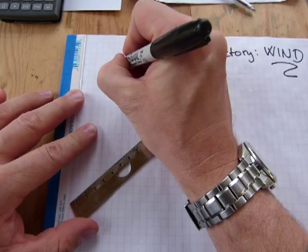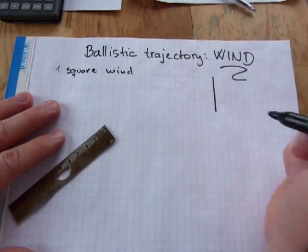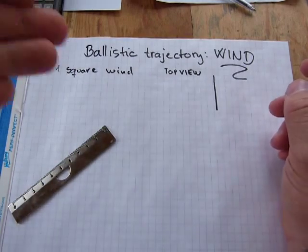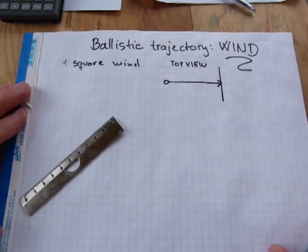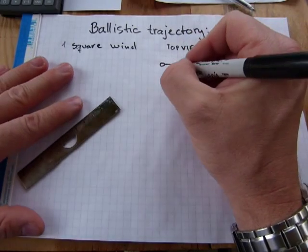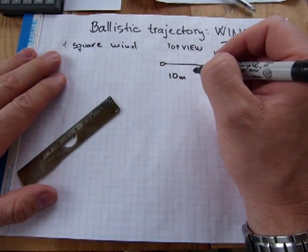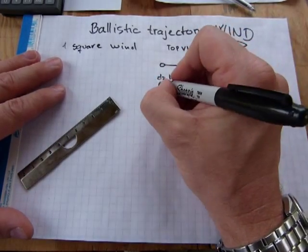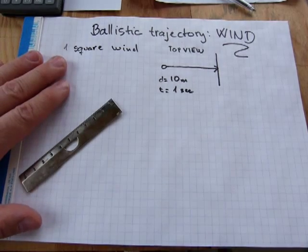Situation 1: Square wind. This is what I mean by square wind. Here is your target setup and this is a top view. Top view means you're looking at a shooting range from above, like from an airplane or helicopter — so that would be the top of a person's head or hat, and the projectile is being shot from there to this point. Let's say the range is a 10-meter distance and the time it takes to travel is one second. This is what I mean by square wind.